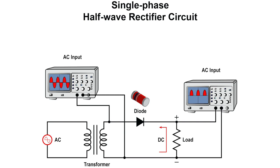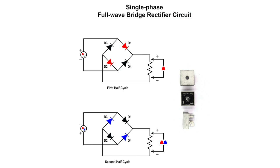A less pulsating and greater average DC current can be produced by rectifying both half cycles of the AC input wave. This can be accomplished with a full-wave rectifier.